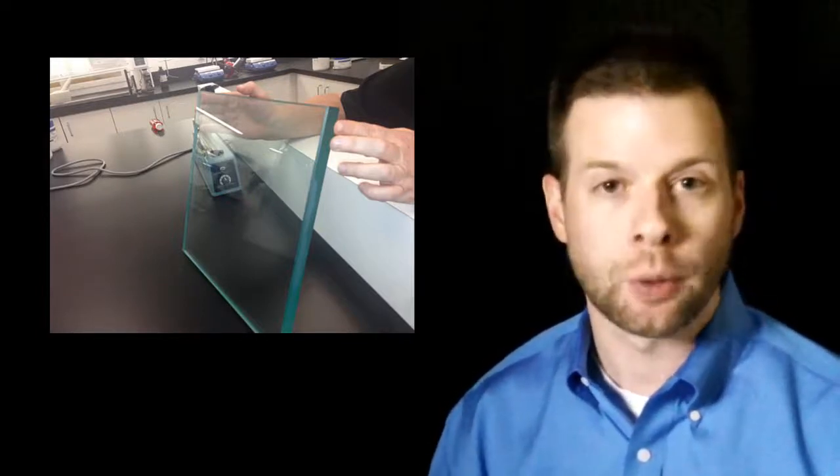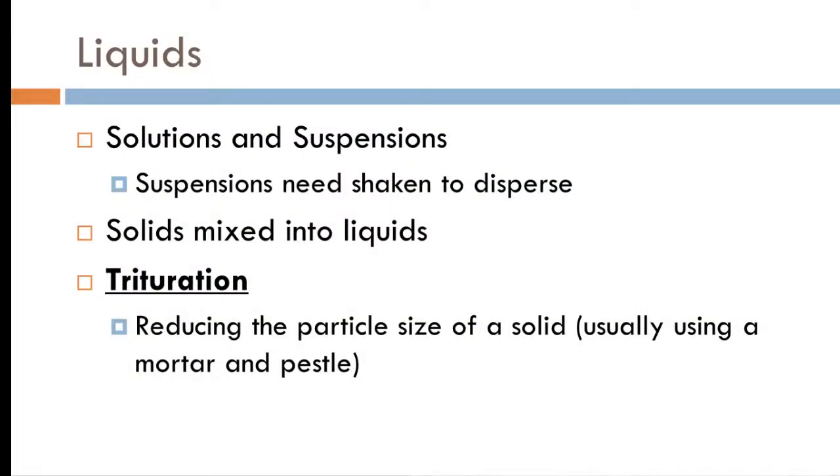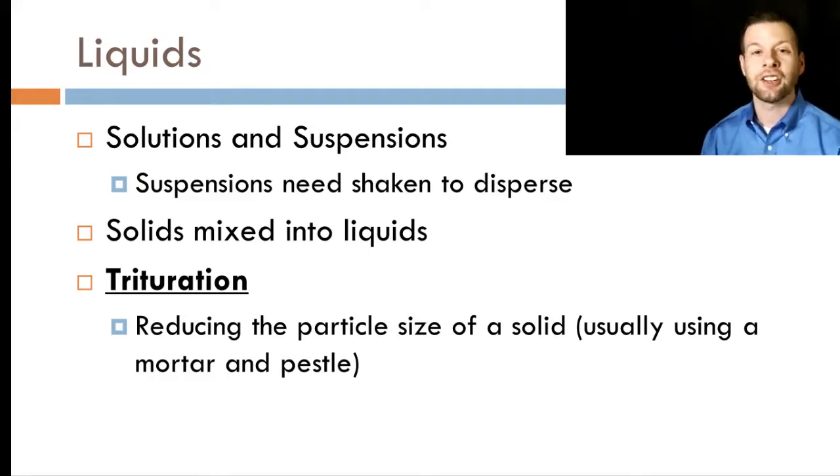Let's discuss liquids - solutions, suspensions, and elixirs. Suspensions need to be shaken to disperse everything and make a homogeneous mixture. Solids will be mixed into liquids. Here's the term I told you about: trituration. We want to reduce the particle size of a solid. One easy way is to use a mortar and pestle. We can crush a tablet to a powder. Particle size is the size of the grains - think sugar as one particle size and powdered sugar as a tinier particle size. You can stick regular sugar in a mortar and pestle, grind it down, and you'll have powdered sugar.